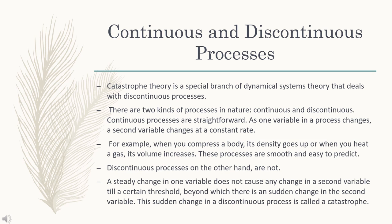There are two kinds of processes within nature: continuous and discontinuous. Continuous processes are straightforward, as one variable in a process changes, a second variable changes at a constant rate. For example, when you compress a body, its density goes up.